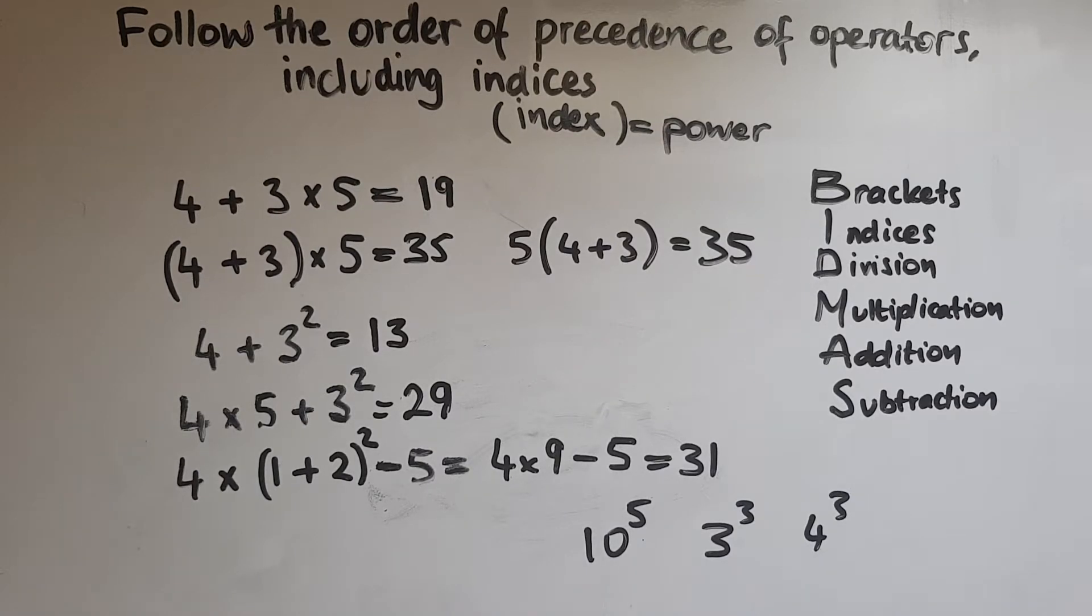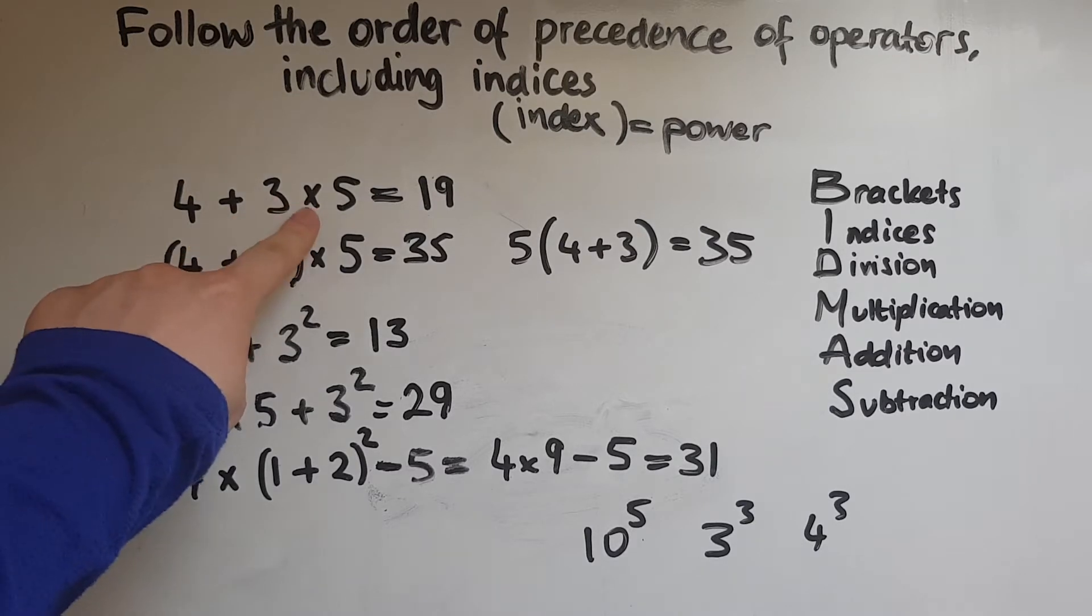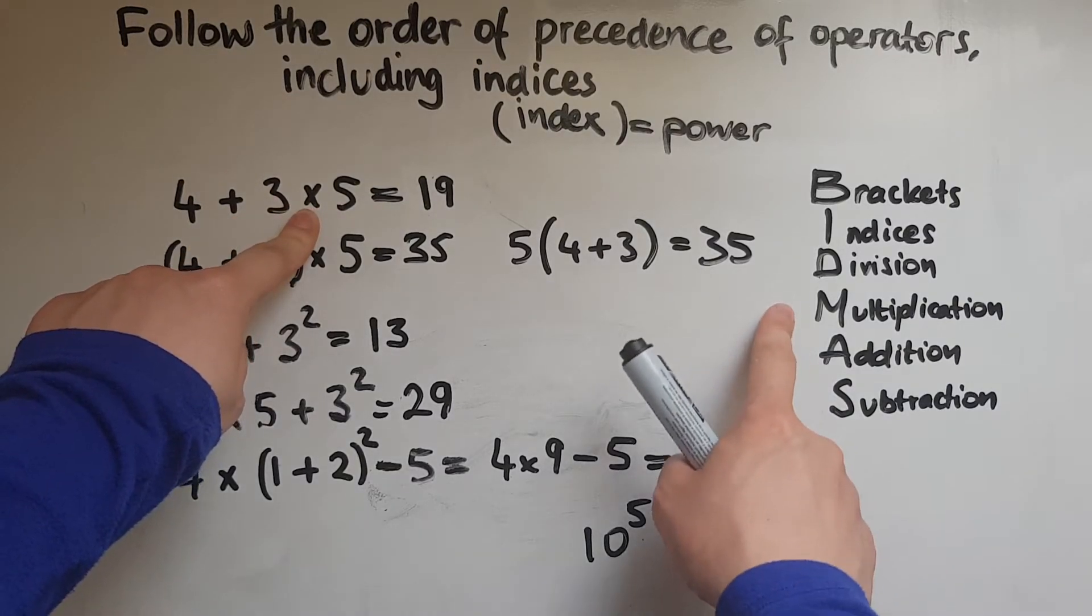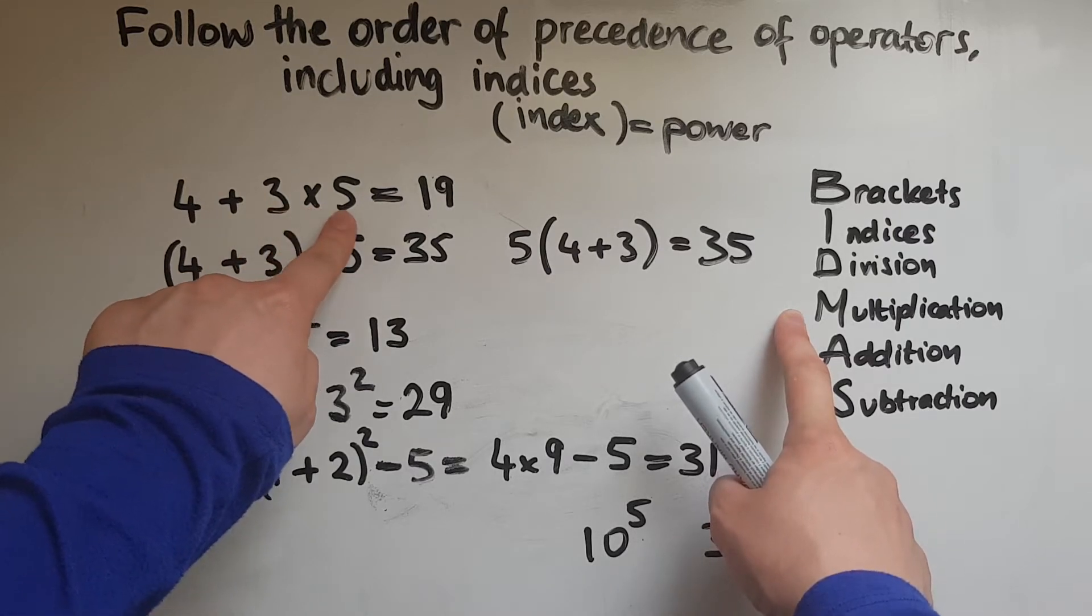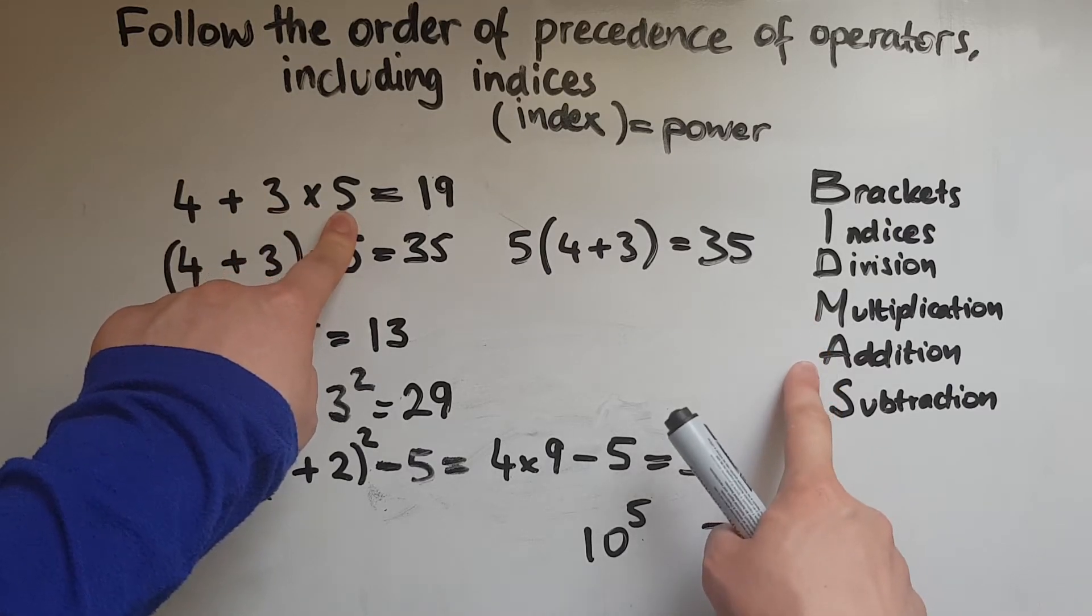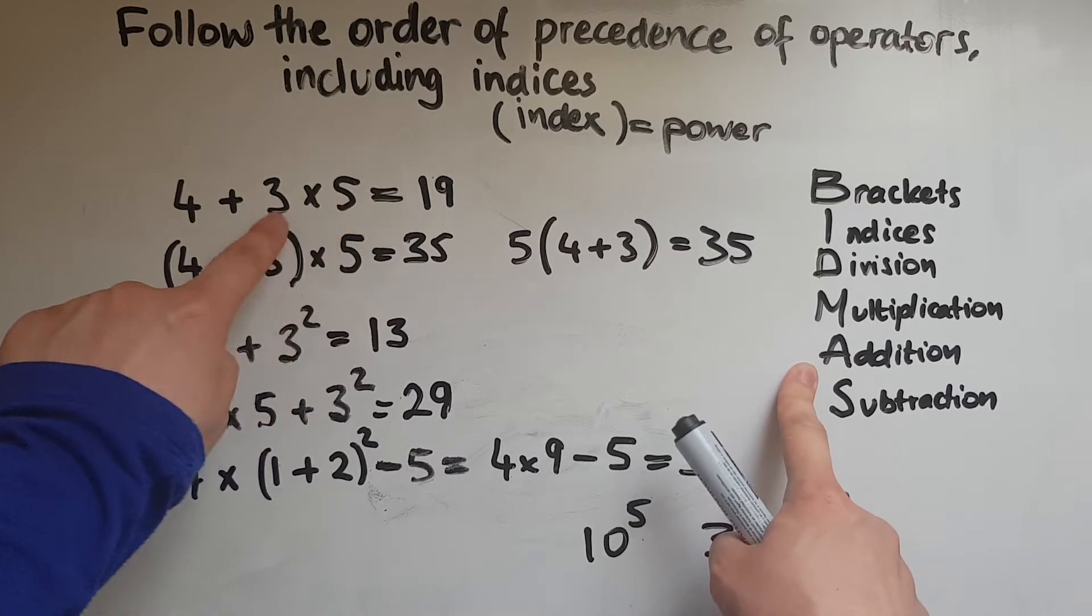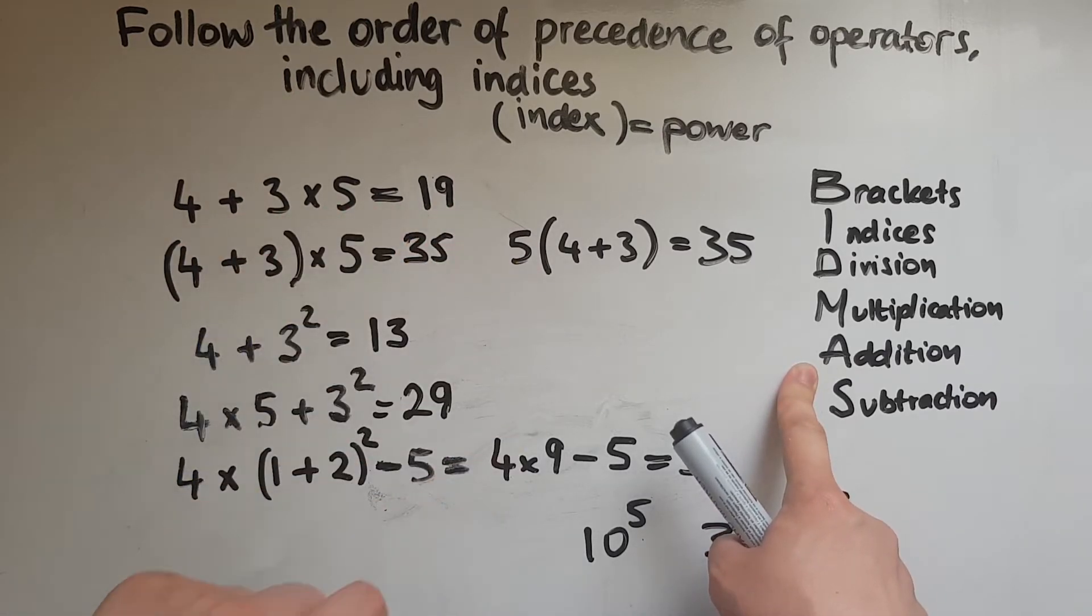So if we go back to these, what do we have to do? We've got addition and multiplication. So which one of them comes first? Multiplication comes first. So 3 times 5 I do first and then I add. So 15 add 4 gives us 19.